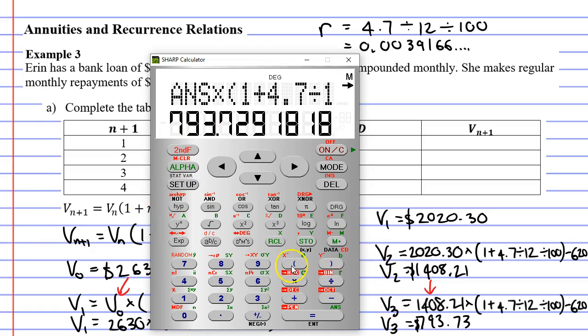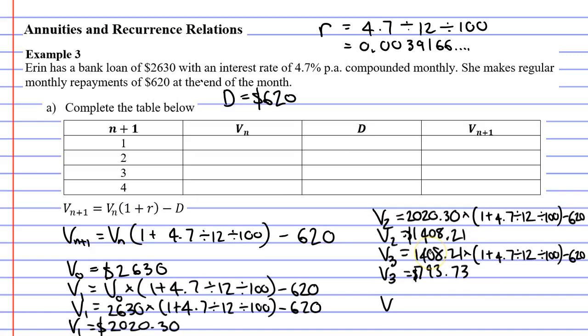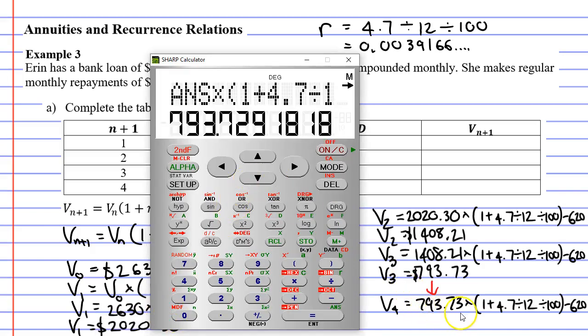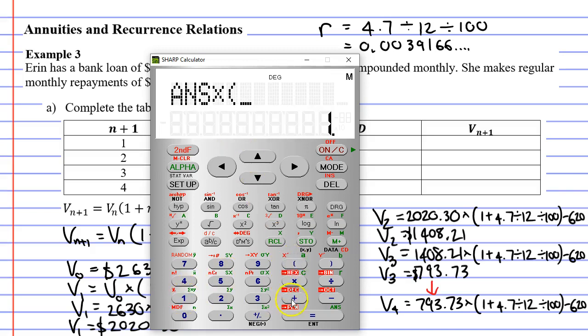Now we also need to calculate V_4, but first I'm going to make some room. So to calculate V_4, we start by taking the previous result, which was $793.73. We then copy down the rest of the calculation that has always remained the same. When we bring up our calculator, the previous result is still in the calculator. So we go times bracket 1 plus 4.7 divide 12 divide 100, close our brackets, minus 620, and we get $176.84.